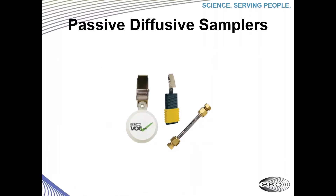My name is Joseph Felder, and on our first slide here, we are looking at three types of passive samplers. On the left, we have our 575 series badge for volatile organic hydrocarbons. In the middle, we have a UMEX series badge, and on the right is a thermal desorption tube. Andy will cover these in more depth later in this presentation.